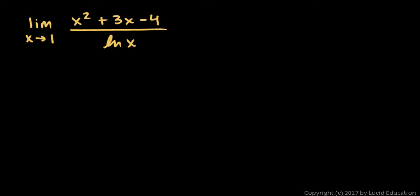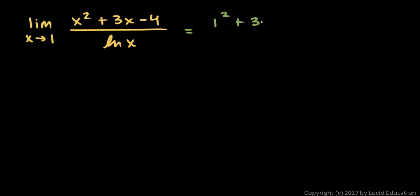The problem is the limit as x approaches 1 of x squared plus 3x minus 4 over the natural log of x. The first and typically easiest approach to solving a limit problem is to try to substitute the x value in for the variable. So we're going to put x equals 1 in for x. When we do that, we get 1 squared plus 3 times 1 minus 4 over the natural log of 1.